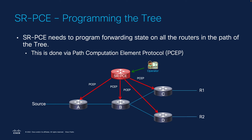By the time the controller has all this information, it can program the forwarding state on all the routers in the path of the tree, which is done by Path Computation Element Protocol, PCEP, and communicates with the nodes to push that state to them. There are multiple ways to do so, but today we are talking about PCEP. We use PCEP from the controllers to the routers to program the state.